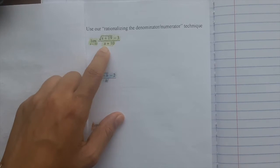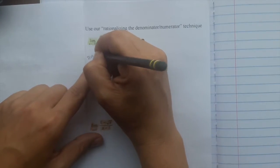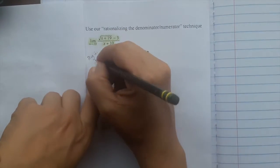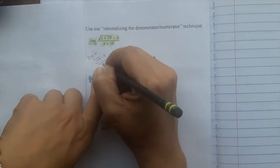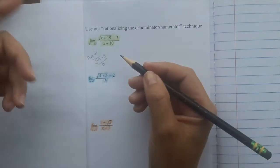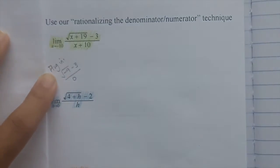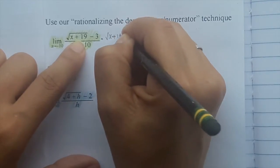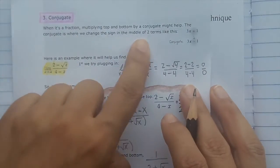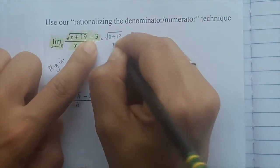Let's take a look at some examples. Again, we plug in first to make sure it won't work. If x equals negative 10, we can't take the square root of a negative number, so direct substitution fails. We conjugate again — just change the sign between the two terms, everything else stays the same. Change it to plus, and do it top and bottom so it doesn't change the value.